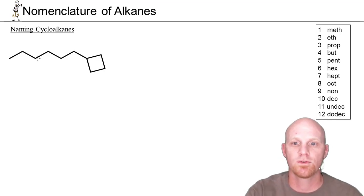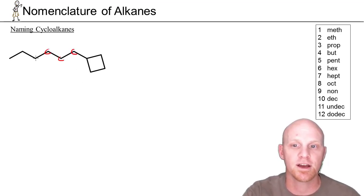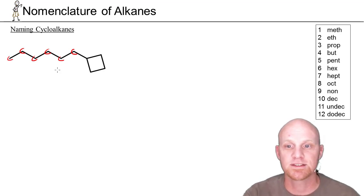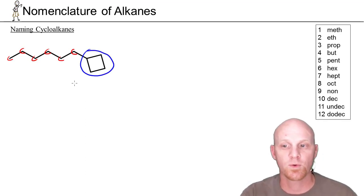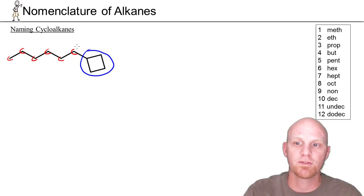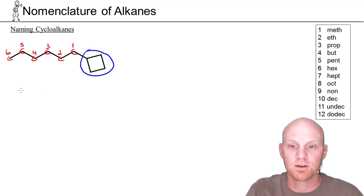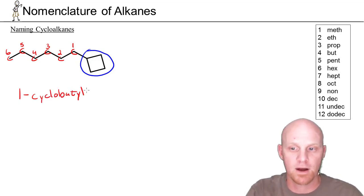In this example, we have a 1-2-3-4-5-6 carbon straight chain not part of the ring, plus a four-membered ring. Since the straight chain is longer, it becomes the parent chain — that's hexane. Our substituent here is the ring. A four-carbon ring would be cyclobutane as a parent chain, but as a substituent it's cyclobutyl, ending in -yl. We number the parent chain from the right to give the substituent the lowest possible number — position 1 instead of 6. So the name is 1-cyclobutylhexane.